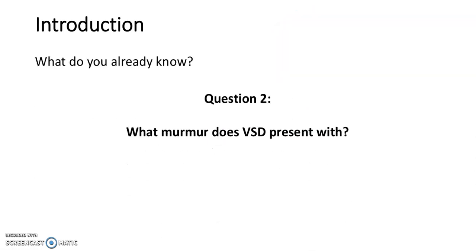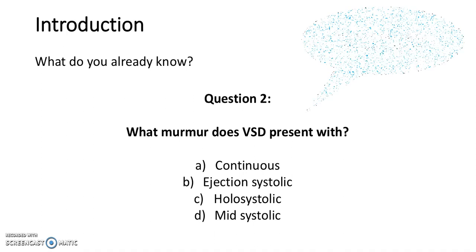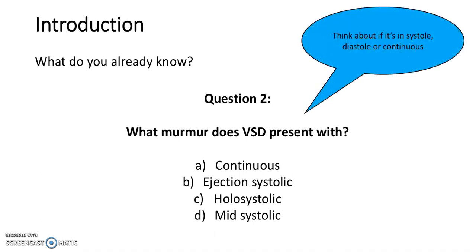Question 2. What murmur does a VSD present with? Is it A. Continuous. B. Ejection systolic. C. Holosystolic. D. Mid-systolic. Think about whether it's in systole, diastole or continuous. The answer is C, holosystolic. A VSD murmur can be heard throughout all of systole, and that's what holosystolic means.